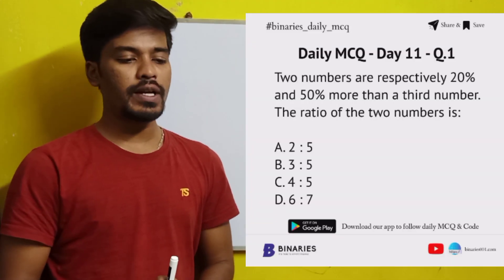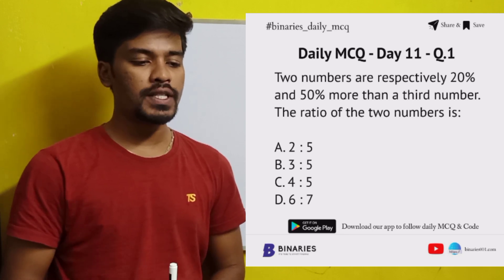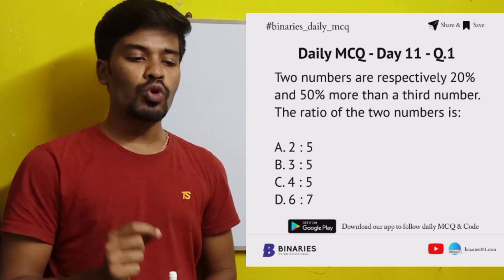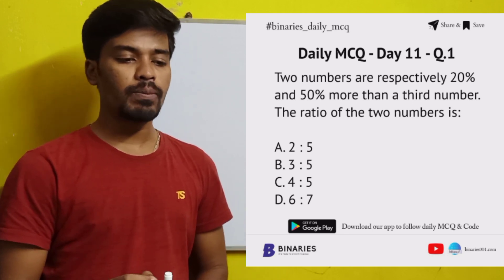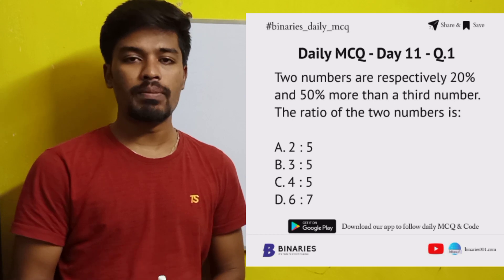Two numbers are respectively 20% and 50% more than a third number. The ratio of the two numbers is?